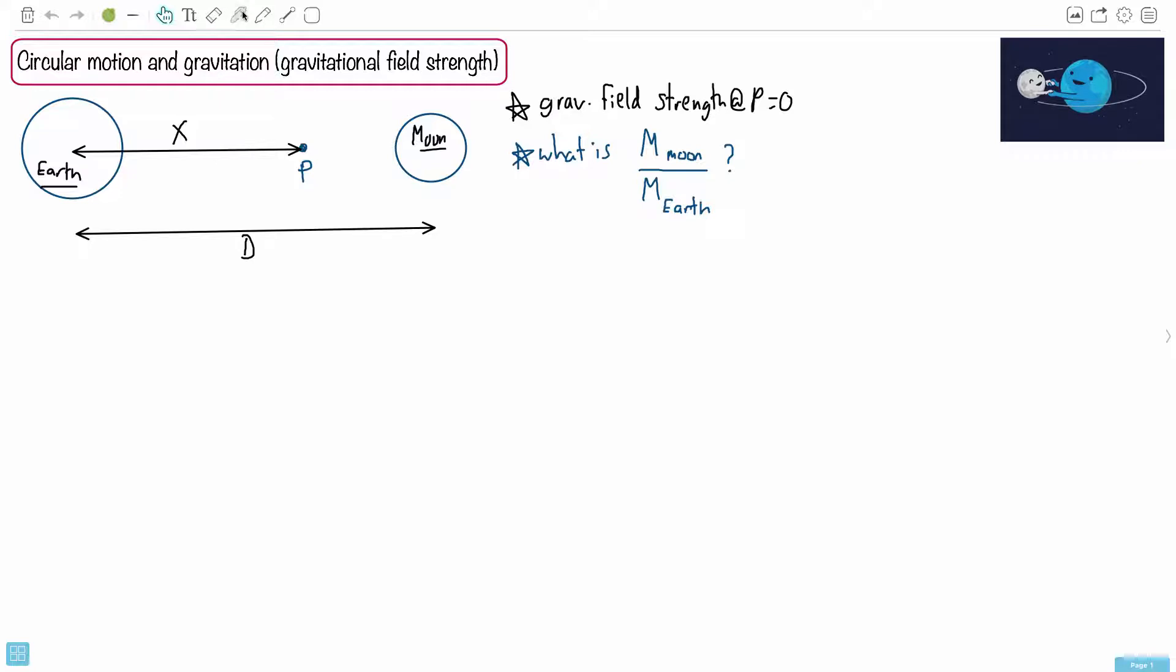By the way, if you wanted, you could rewrite it. I don't feel like writing Moon all the time, so I'm going to say M with little subscript M is going to be Moon over ME for Earth. So hopefully that'll be okay. I want this.